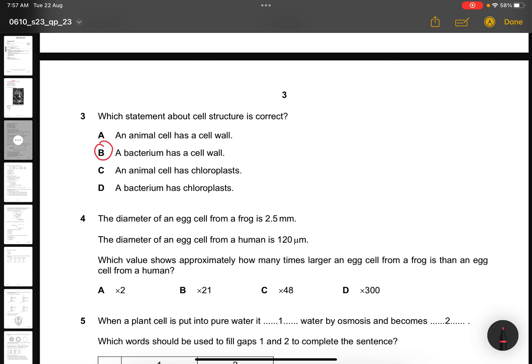Question 4. The diameter of an egg cell from a frog is 2.5 millimeters. The diameter of an egg cell from a human is 120 micrometers. Which value shows approximately how many times larger an egg cell from a frog is than an egg cell from a human? Convert 2.5 mm into micrometers, which is 2.5 times 1000, which gives you 2500 micrometers. Then use 2500 by 120, which gives you 20.833, which is equivalent to 21. So the answer is B.